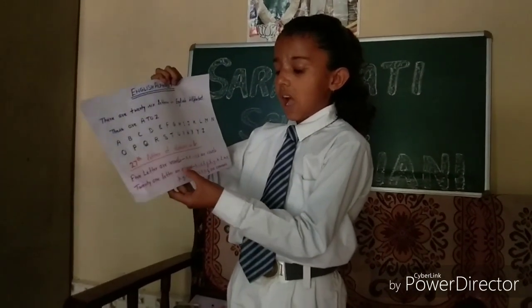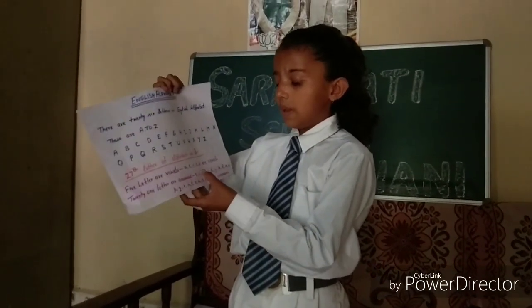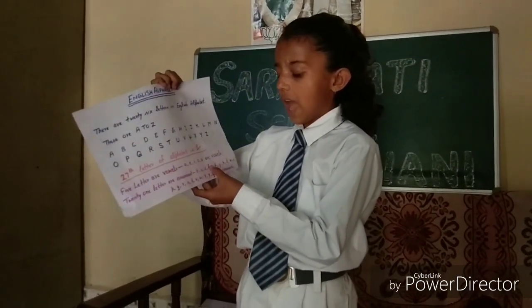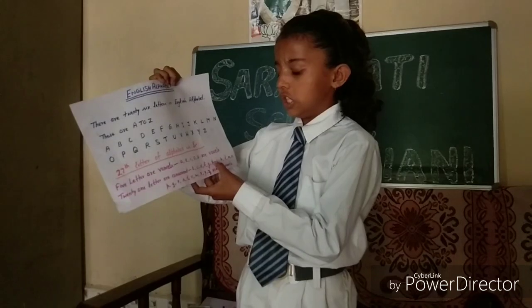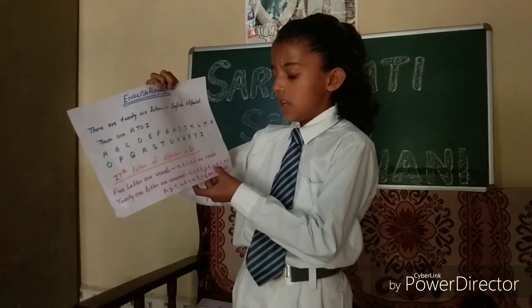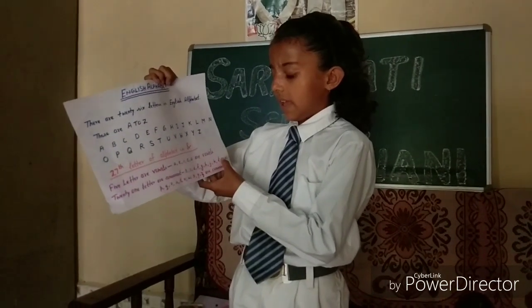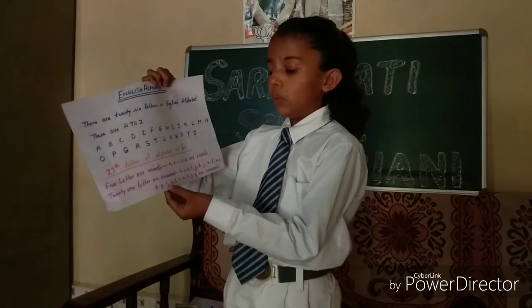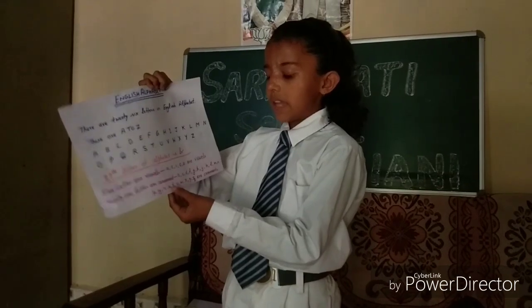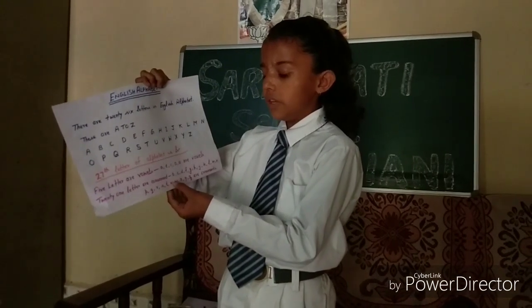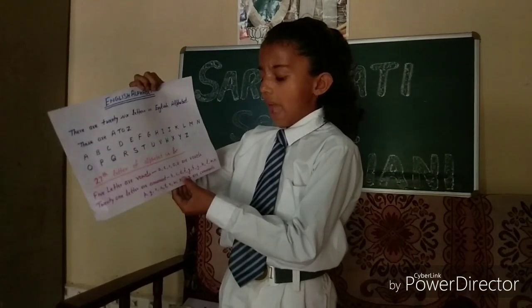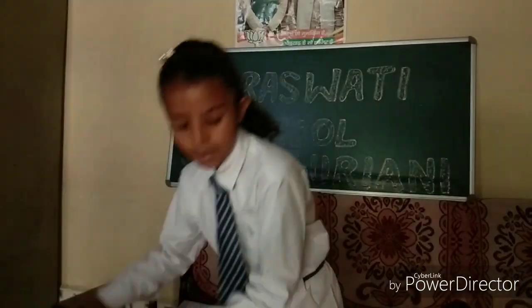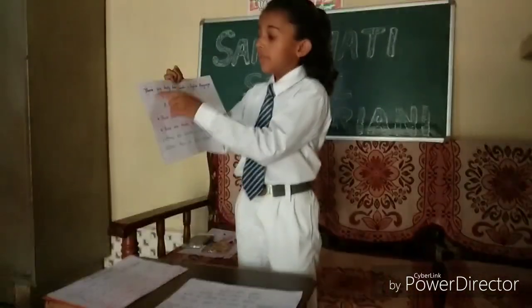21 letters are consonants: B, C, D, F, G, H, J, K, L, M, N, P, Q, R, S, T, V, W, X, Y, Z are consonants.